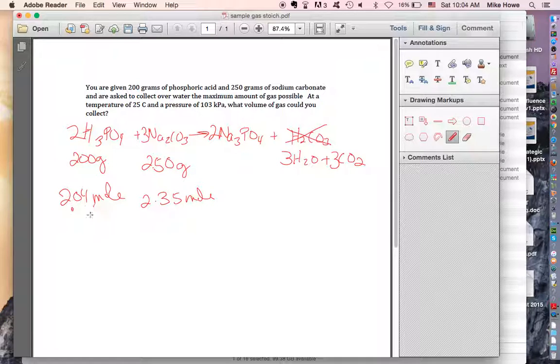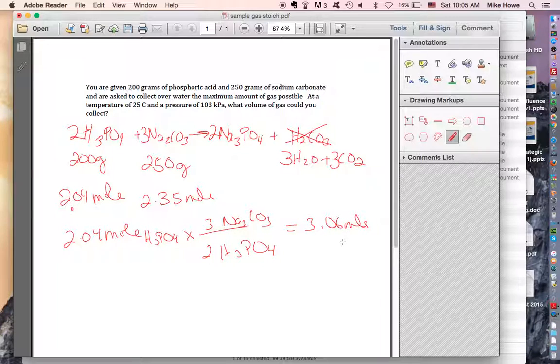So we're looking at a 2 to 3 ratio. If I take the 2.04 moles of phosphoric acid, then determine how many moles of sodium carbonate I would need to consume that, to be a 3 to 2 ratio. So I'd end up with 3.06 moles of sodium carbonate. That's how much I need. But I don't have that much. I only have 2.35 moles. So that means that the sodium carbonate's limiting. It's going to run out first. So the amount of product is going to depend on the sodium carbonate.